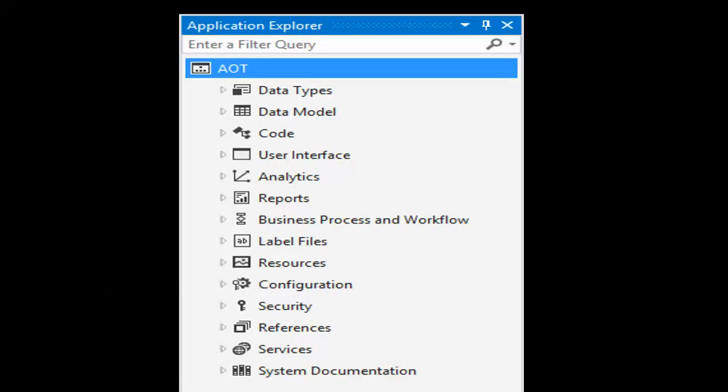AOT in Application Explorer contains child nodes in each node. This is called a model view. Each of these models consists of its own set of system elements.